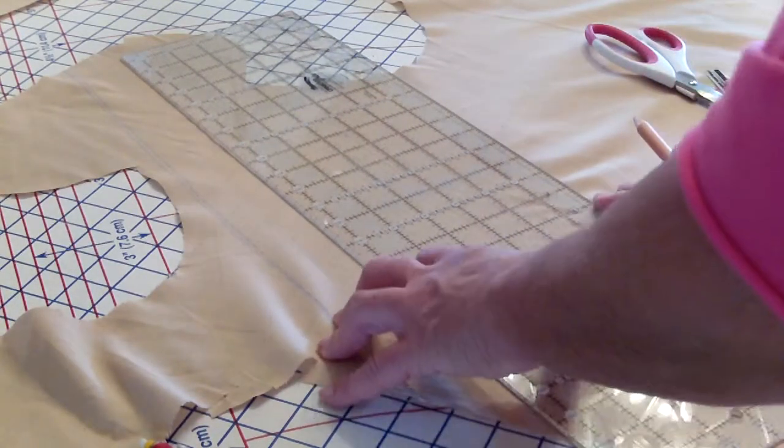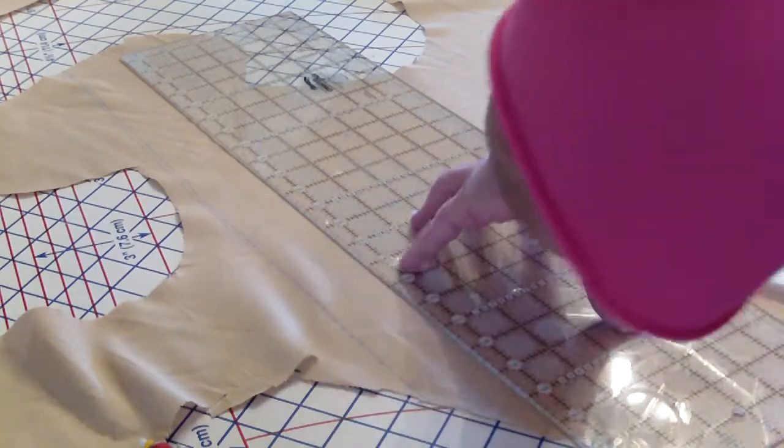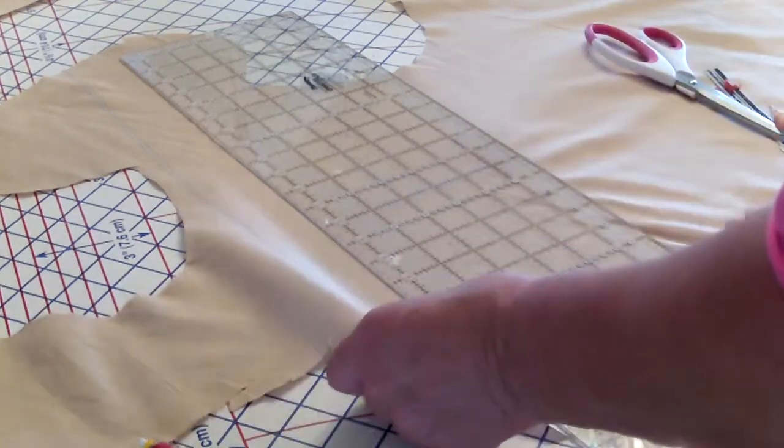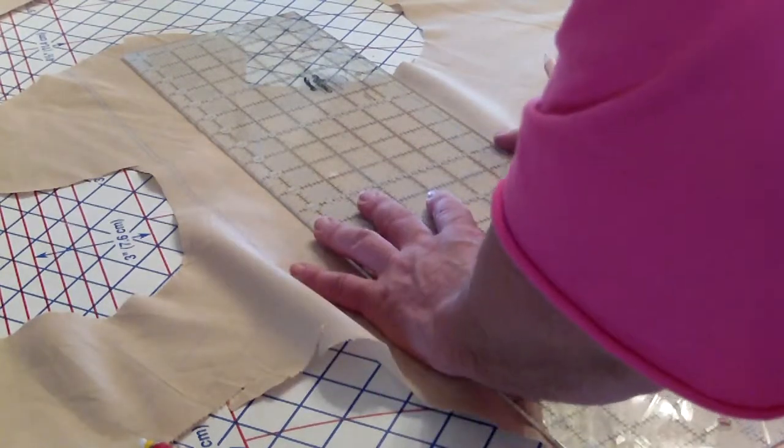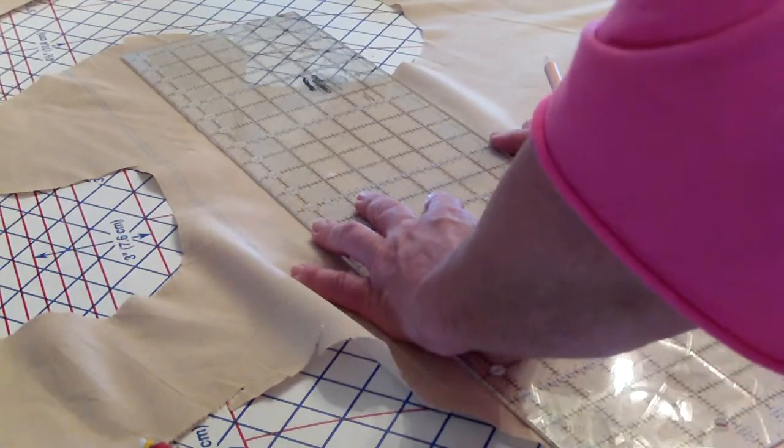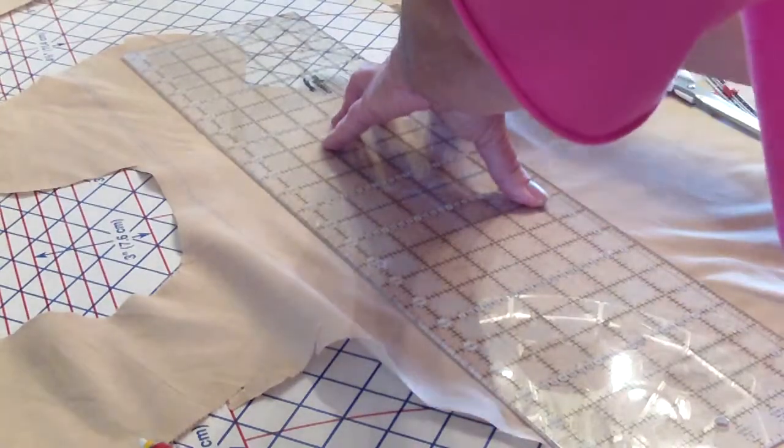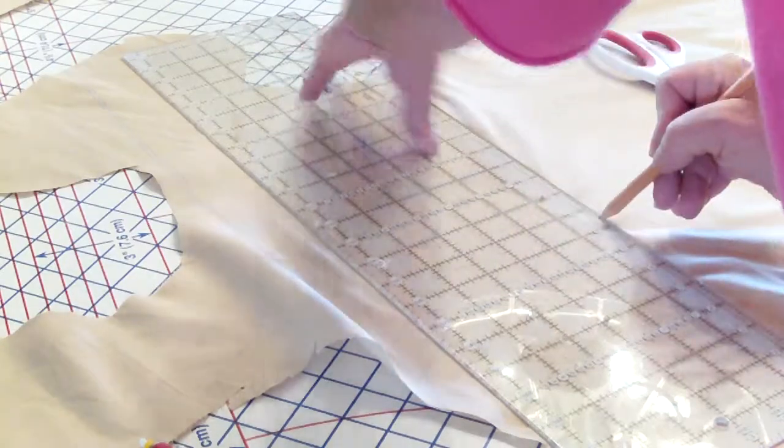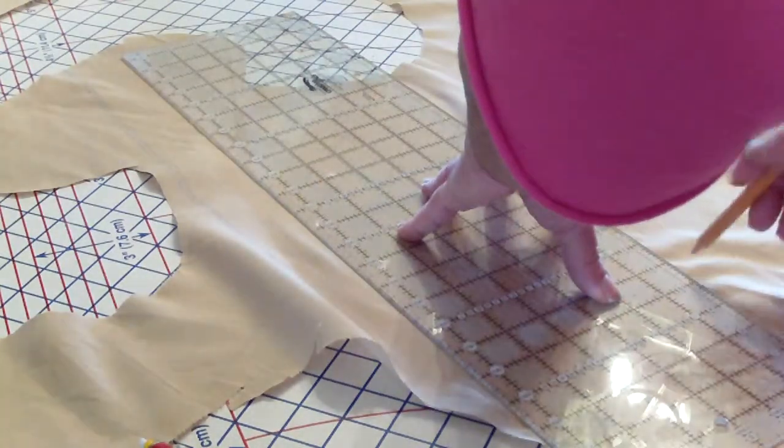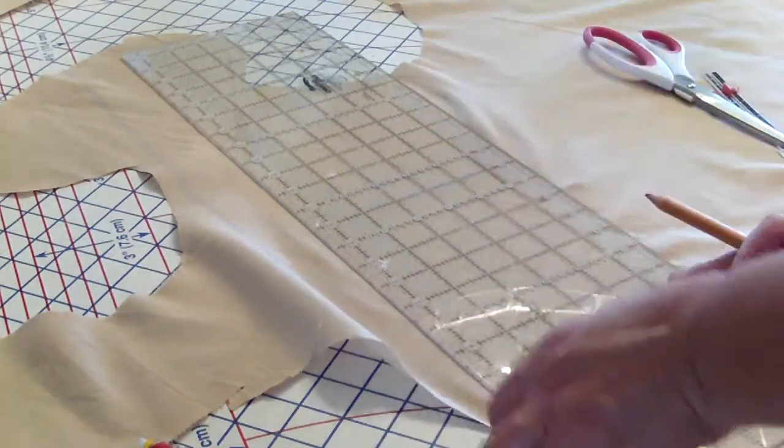All right, so I'm marking it every inch apart. This way, when I iron it and fold it, I just want it to be on the line. This way I can see it.